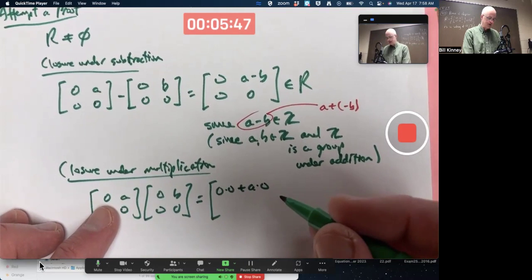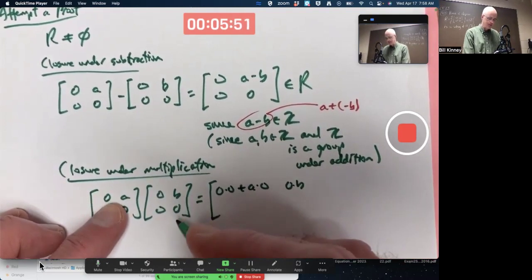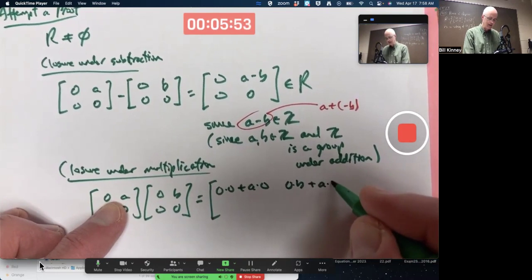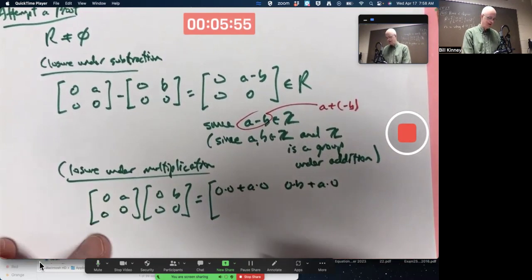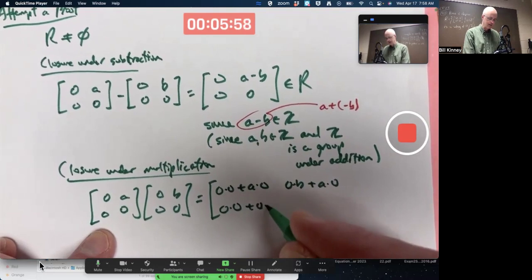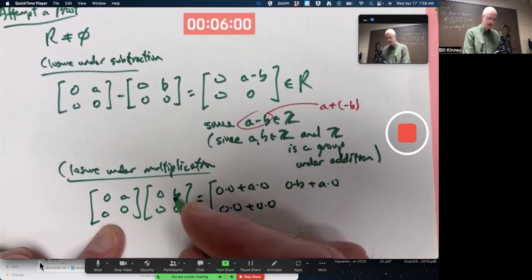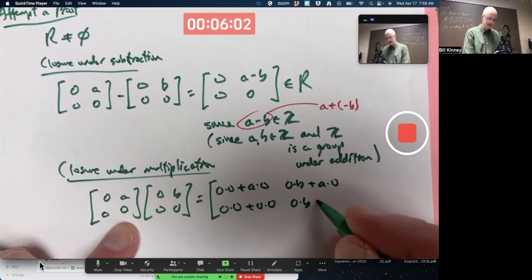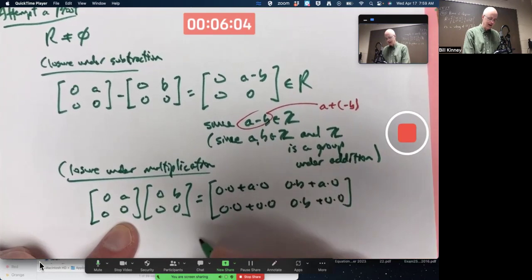That's the upper left entry. Upper right entry is going to be 0 times B plus A times 0. Lower left entry is going to be 0 times 0 plus 0 times 0. Lower right entry is going to be 0 times B plus 0 times 0. And,